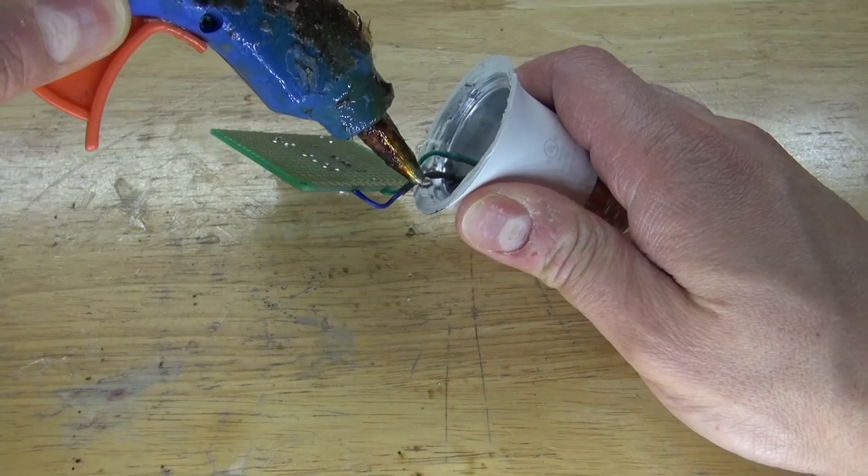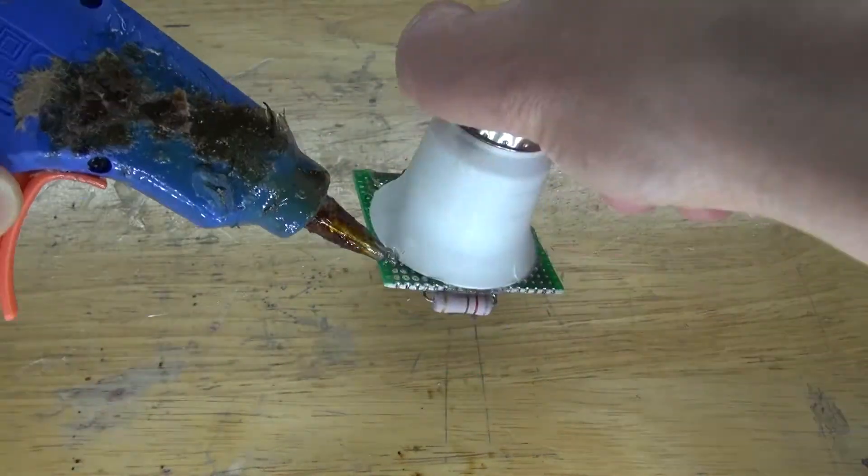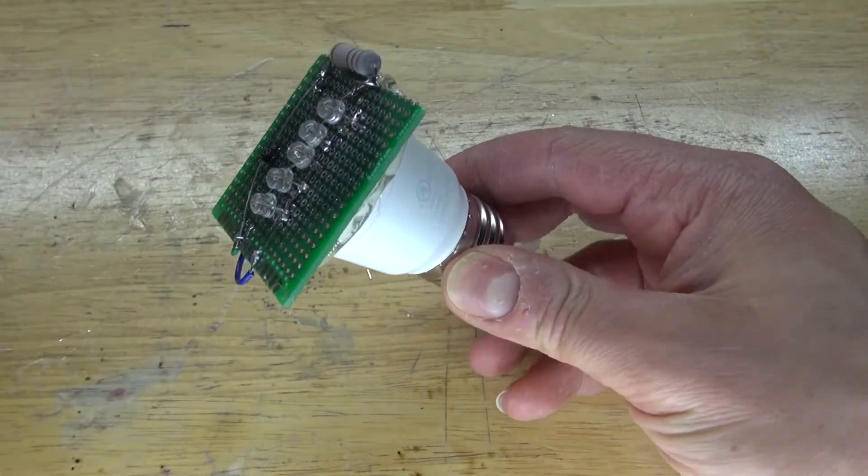Next, take some hot glue and place it on the perimeter of the housing. And glue the perfboard to it. Add some more hot glue to secure it in place. And there, this part is now complete.